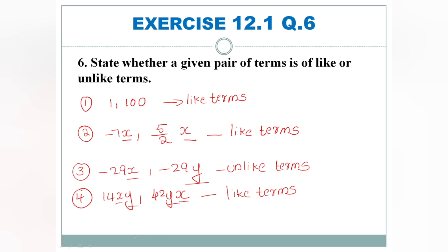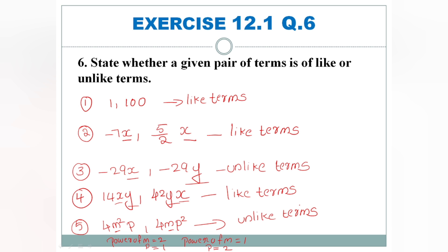The fifth pair is 4m squared p and 4mp squared. The power of m is 2 in the first term and 1 in the second, and the power of p is 1 in the first and 2 in the second. Same variables but different powers, so these are unlike terms.